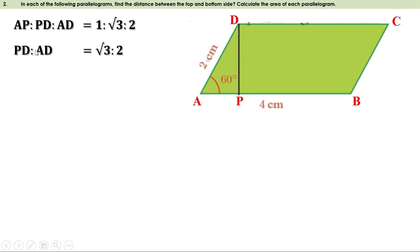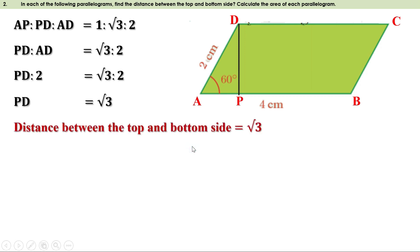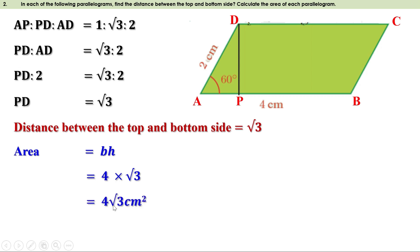AD is 2. Replacing AD by 2, we get PD:2 = √3:2. The right side of each ratio is the same, therefore the left sides are also the same, meaning PD = √3. Or you can do it as: PD × 2 = 2 × √3, therefore PD = 2√3/2 = √3. That means the distance between the top and bottom sides is √3 centimeters. Now we have to find the area: Area = B × H. Here B is 4 centimeters and H is √3 centimeters, therefore Area = 4 × √3 = 4√3 cm².